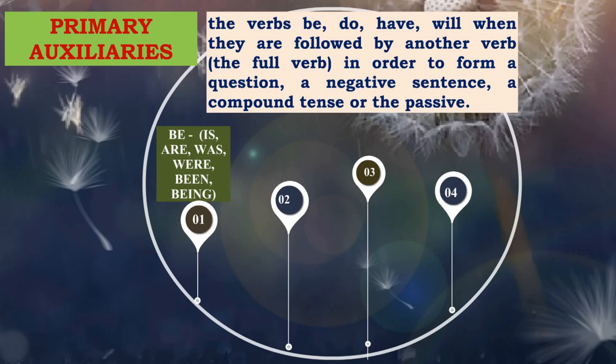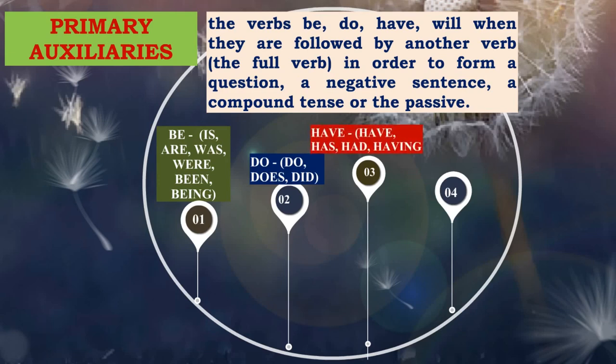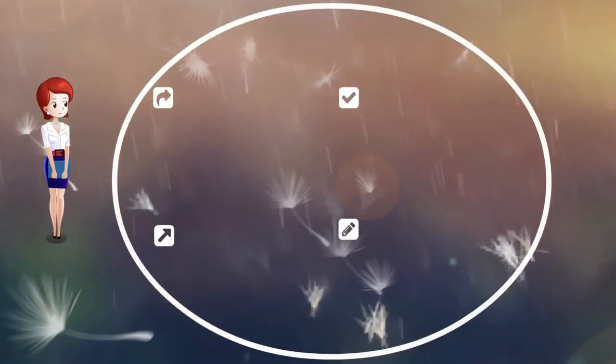The 'be' form includes: is, are, was, were, been, and being. 'Been' is the past participle and 'being' is the present participle of the 'to be' form. The 'do' form includes: do, does, did, and also negative forms like doesn't and didn't. The 'have' form includes: have, has, had, having, and negative forms like haven't, hasn't, hadn't. The fourth primary auxiliary is 'will', which also appears in modal auxiliaries but with different functions.